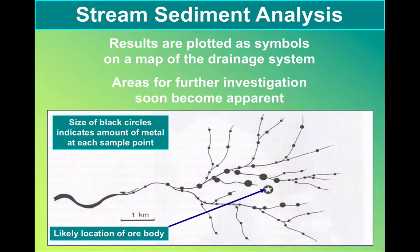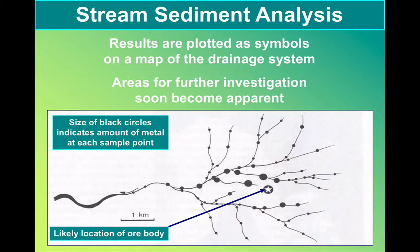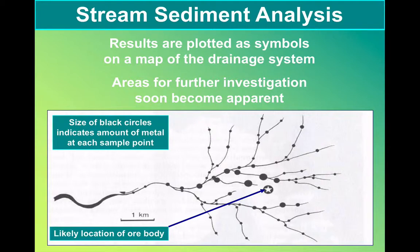The results of both of these surveys can be plotted on a map, as an example shown here on the screen. The larger the circles at each sample location, the greater the concentration of metal. You can see this guides a geologist into a particular part of the drainage basin where further study can identify the exact location of an ore body. So these techniques are all about narrowing down search areas, finding out where areas of interest may be located and then applying further investigative techniques.